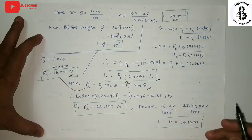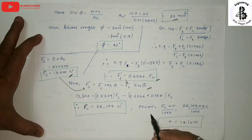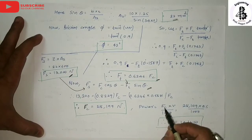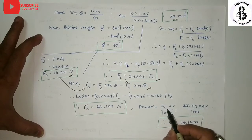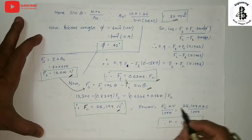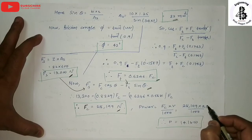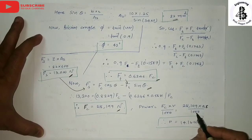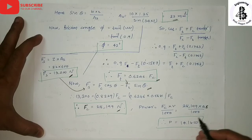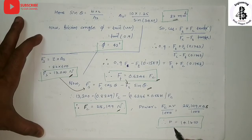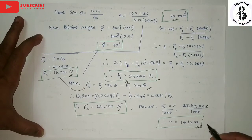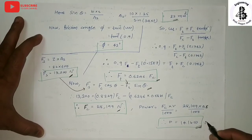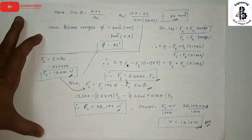For power: Power = Fc × V / 1000. Substituting Fc = 28,199 N and velocity V = 0.5 m/s, the power required = 14.1 kilowatts. This is the final answer.